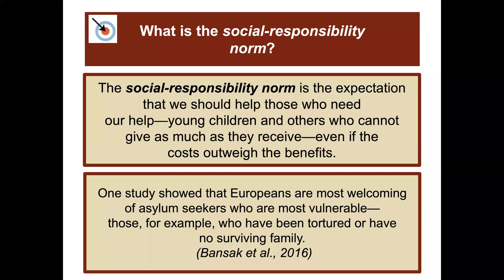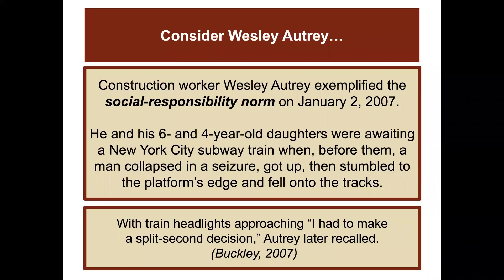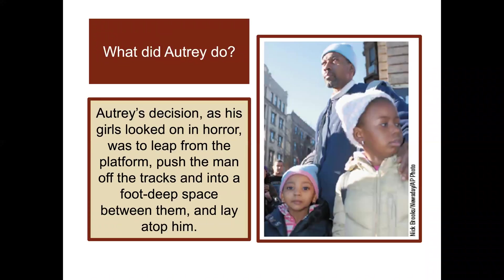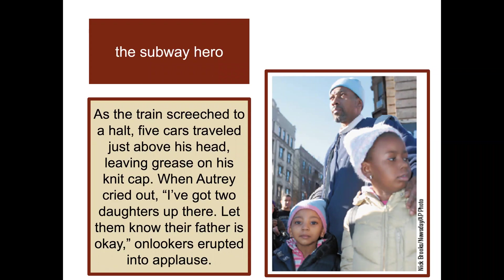One study showed that Europeans are most welcoming of asylum seekers who are most vulnerable — for example, those who have been tortured or have no surviving family. Construction worker Wesley Autry exemplified the social responsibility norm on January 2, 2007. He and his six- and four-year-old daughters were awaiting a New York City subway train when a man collapsed in a seizure, got up, stumbled to the platform's edge, and fell onto the tracks. With train headlights approaching, Autry made a split-second decision to leap from the platform, push the man off the tracks into a foot-deep space, and lie on top of him. As the train screeched to a halt, five cars traveled just above his head, leaving grease on his knit cap. When he cried out, 'I've got two daughters up there, let them know their father is okay,' the onlookers erupted in applause.